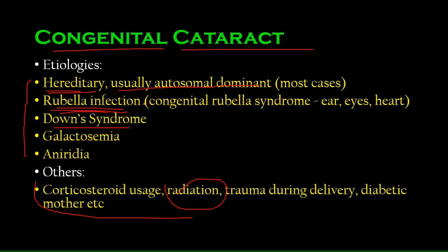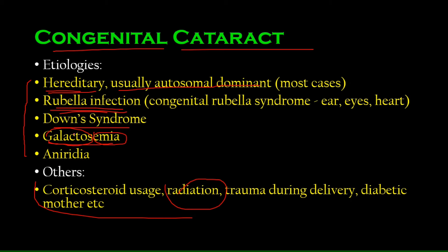Galactosemia is a disease caused by absence of a certain enzyme that cannot break down galactose. As a result, galactose and its byproducts accumulate in the body, including in the lens, contributing to cataract formation.